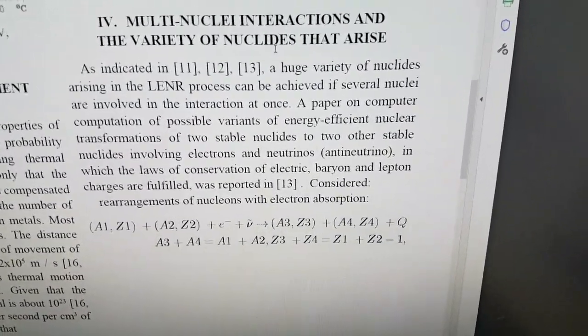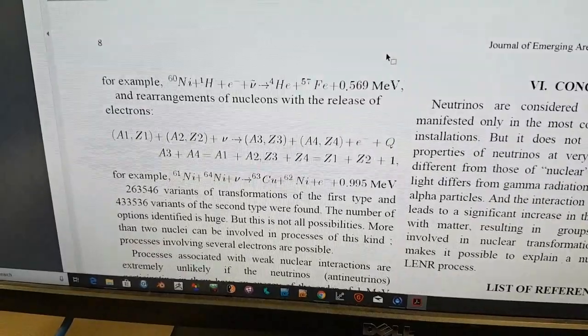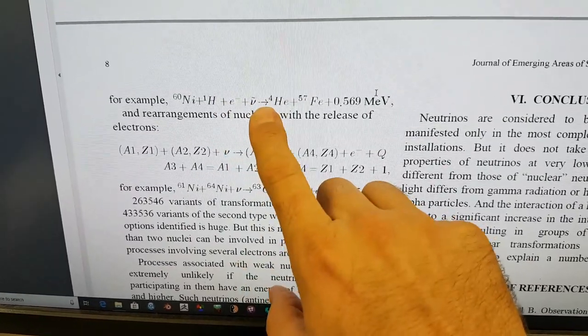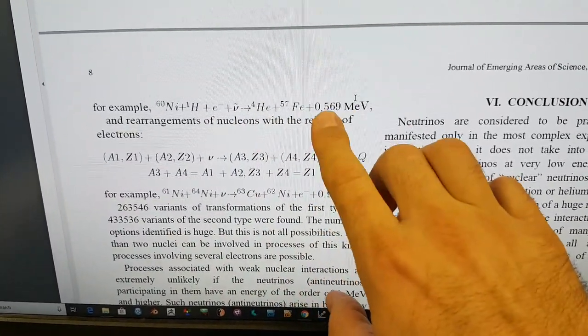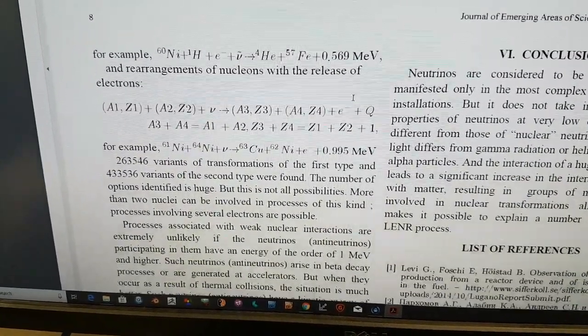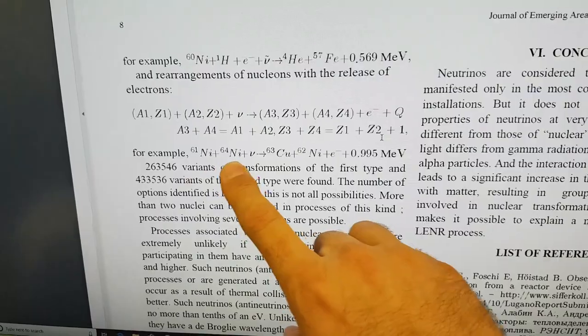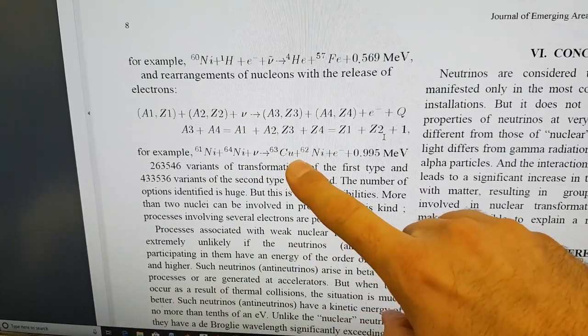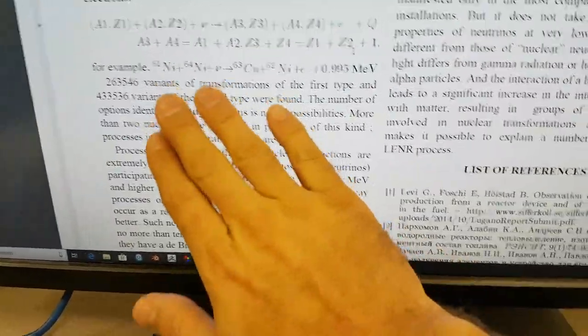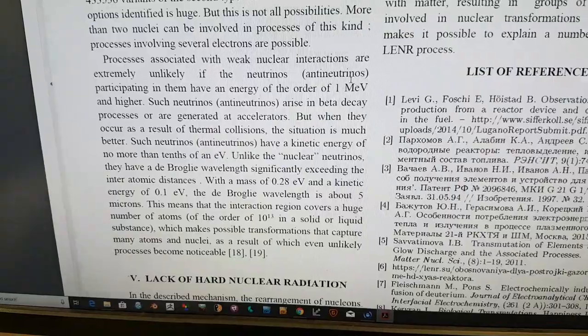Considered rearrangements of nucleons with electron absorption. So, this is taking an electron on board using a neutrino process. For example, 60 nickel plus 1 H plus an electron plus an antineutrino goes to 4 helium and 57 iron plus 0.569 MeV. And rearrangements with the release of electrons. That's all in the Parkhomov reaction table calculator.